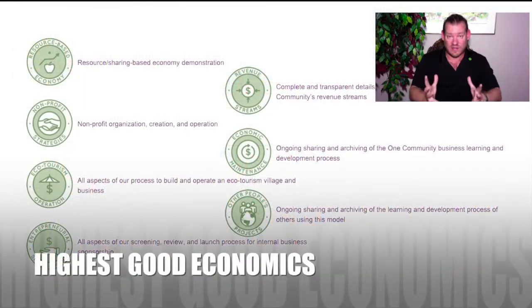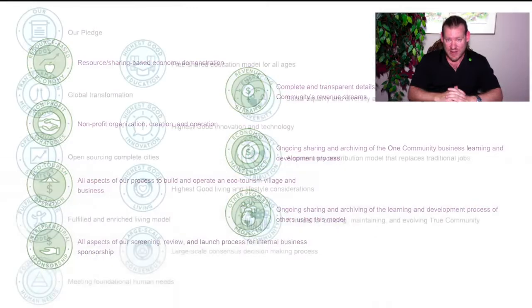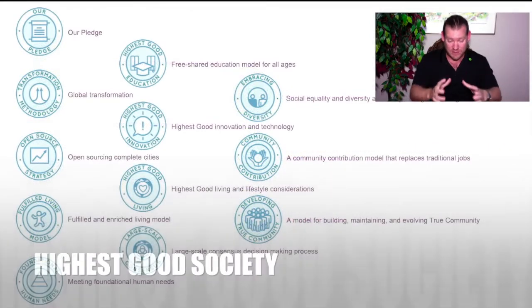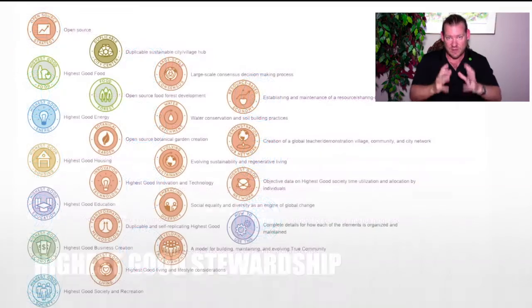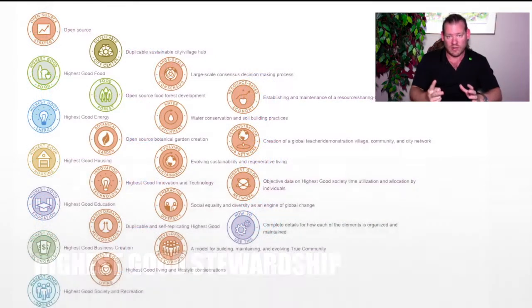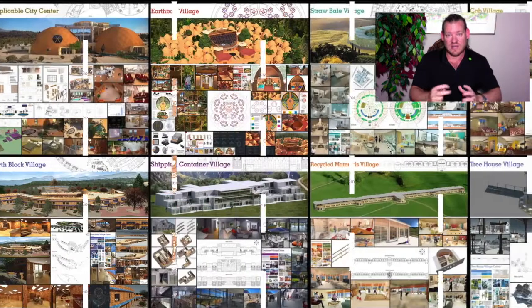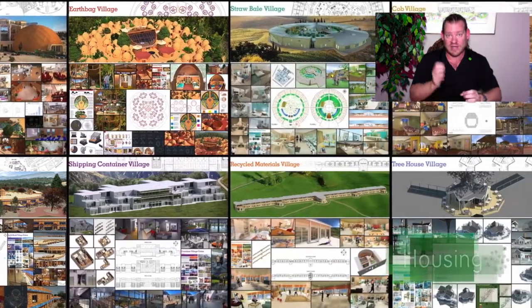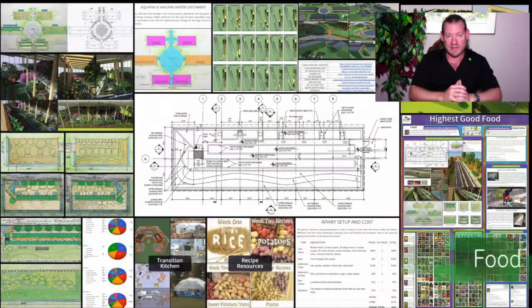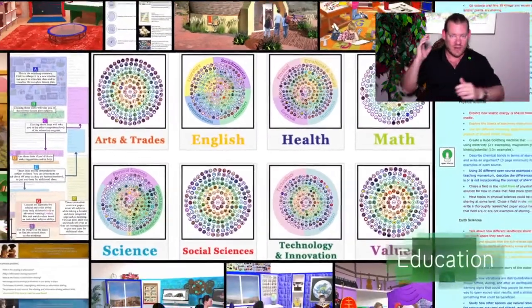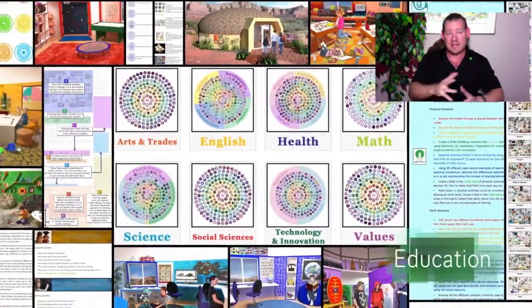We see it as a path to global transformation. If you run the numbers — 50 people starting something like this, if those 50 people can stimulate two more groups to start the next year, and those three can stimulate four more the year after, then eight, 16, 32 — if you run that process out within 30 years...